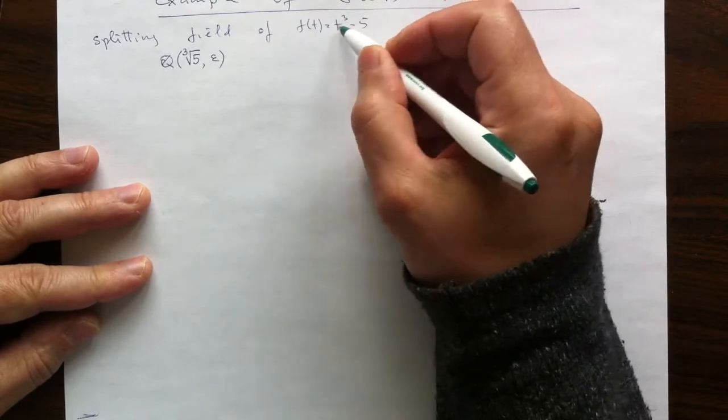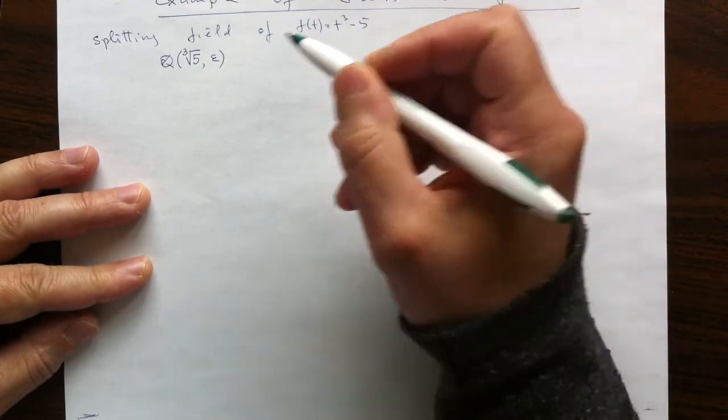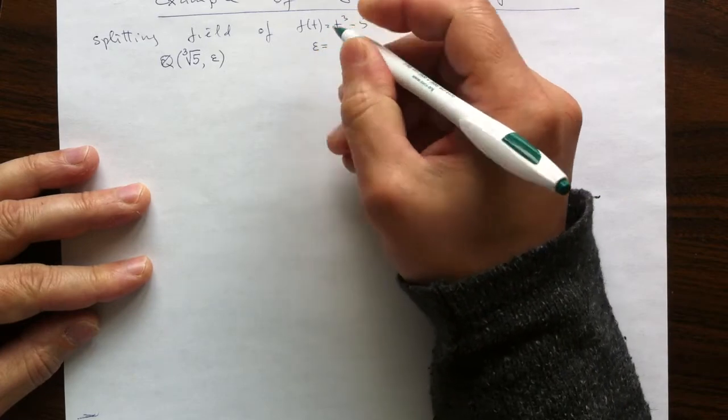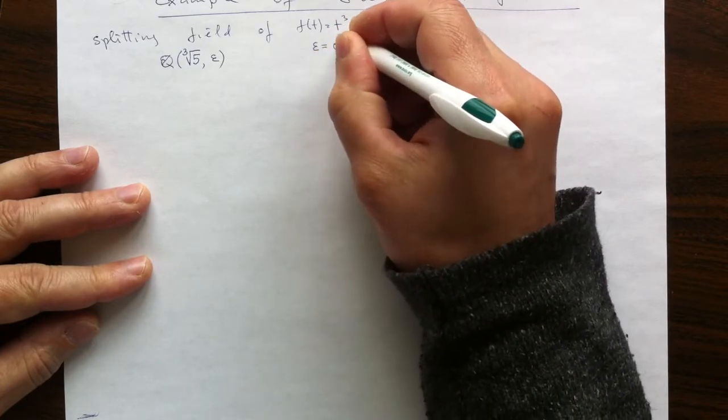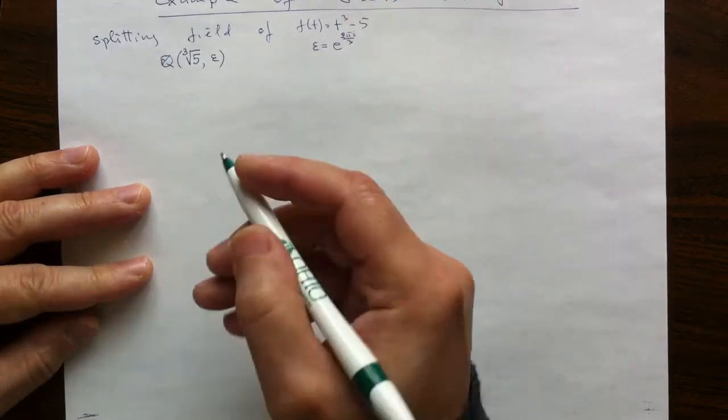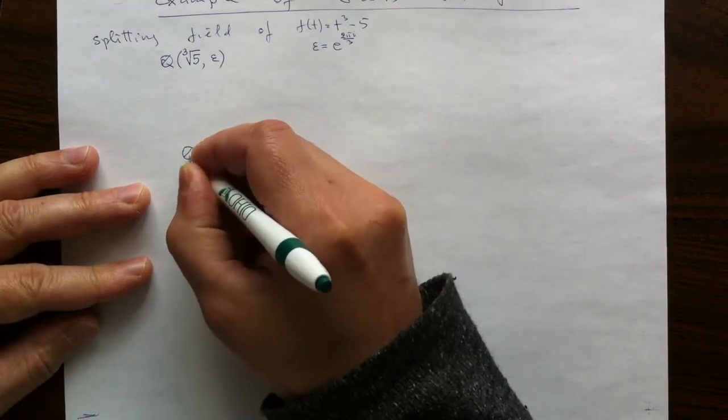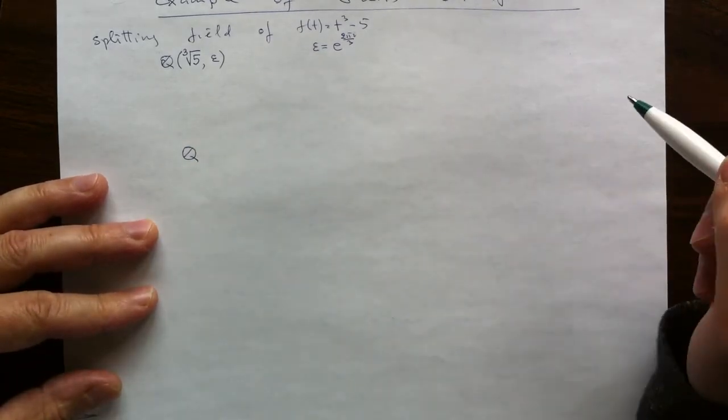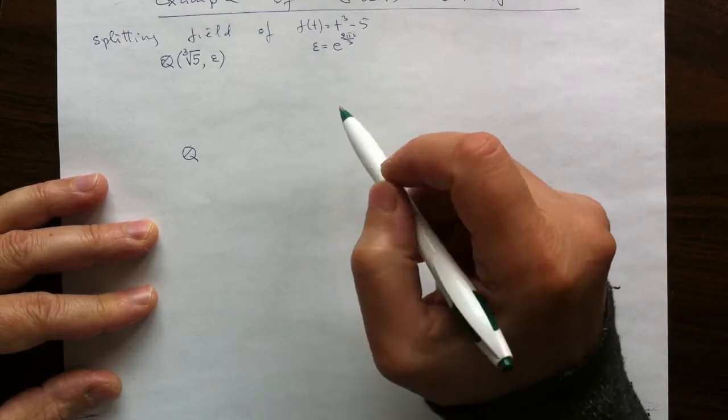That is basically because any two roots of this, the ratio of them, will be a cubic root of 1. So we could make epsilon concrete by choosing it to be e to the 2 pi i over 3. So we will analyze the structure of subfields of this field, and they will all contain rationals obviously, and we will use Galois correspondence for that.